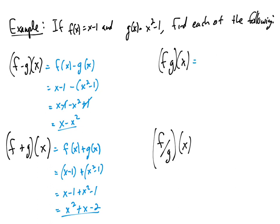Alright, all pretty straightforward. This means f of x times g of x. So we're going to have x minus 1 times x squared minus 1. When we distribute this out, we get x cubed minus x squared minus x plus 1.